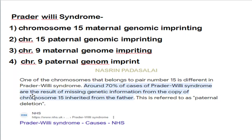Prader-Willi syndrome is due to loss of chromosome 15 inherited from the father — option number 2 is correct. This syndrome results from paternal deletion. Affected individuals lack functional chromosome 15 from the paternal side, making it an example of paternal genomic imprinting, where chromosome 15 inherited from the father is not functioning or has missing genetic information.